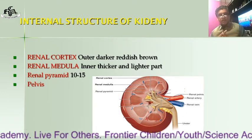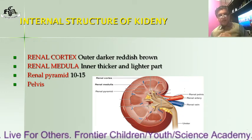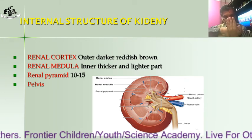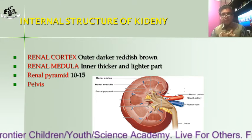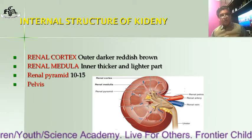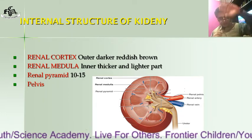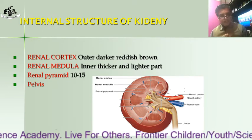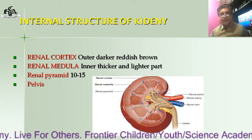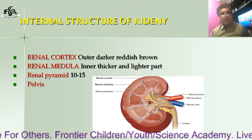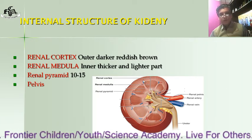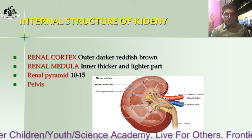Now the internal structure of the kidney: if we take a longitudinal section — meaning we cut lengthwise — we will see these parts. The renal cortex is the outer, dark reddish-brown portion, as you can see in this diagram. This outer portion is called the renal cortex.